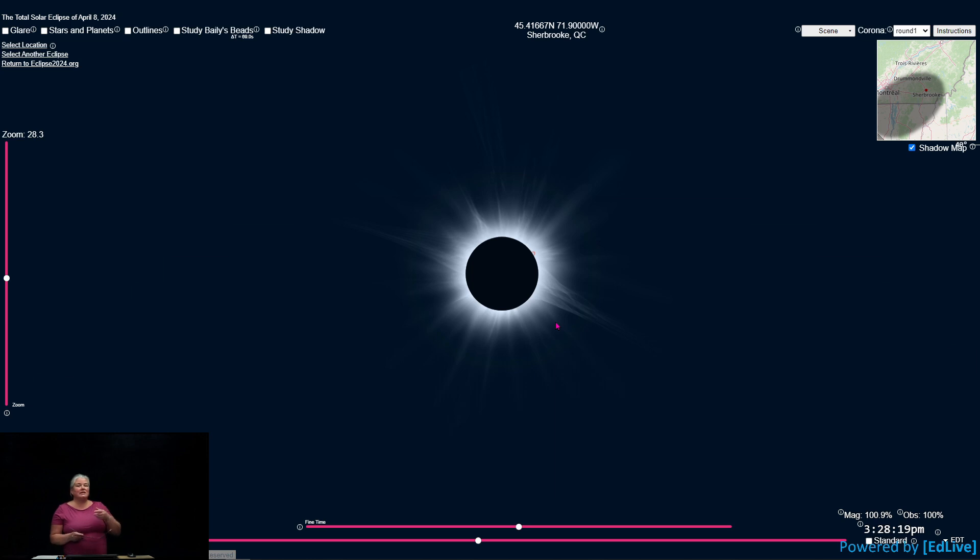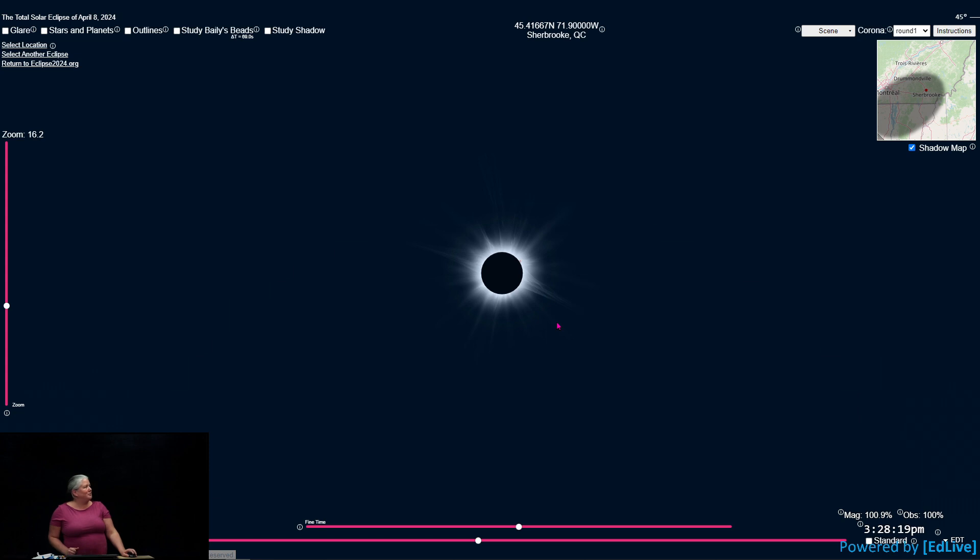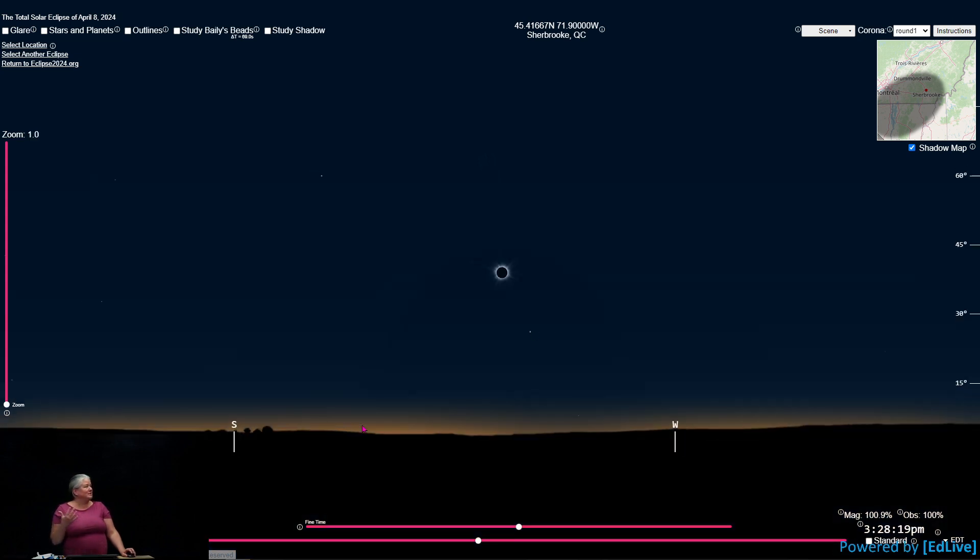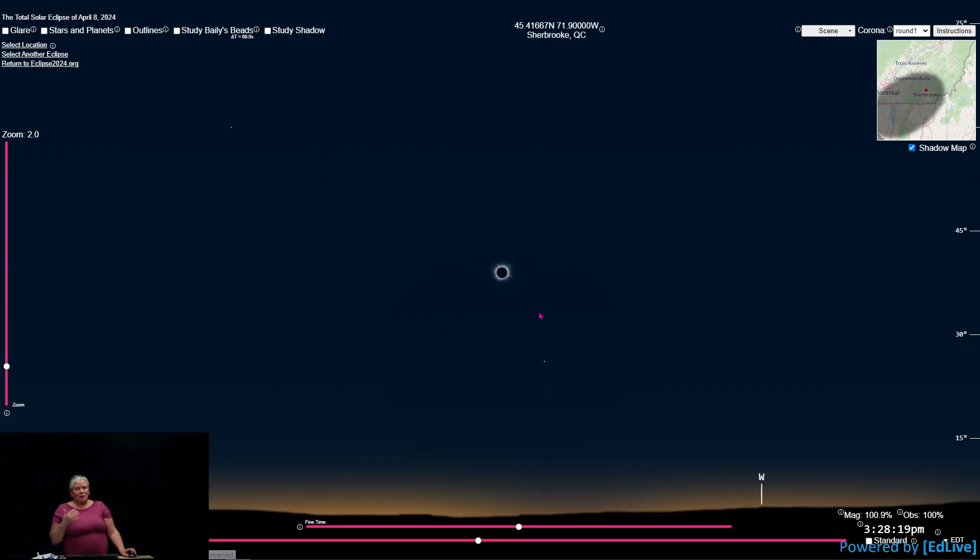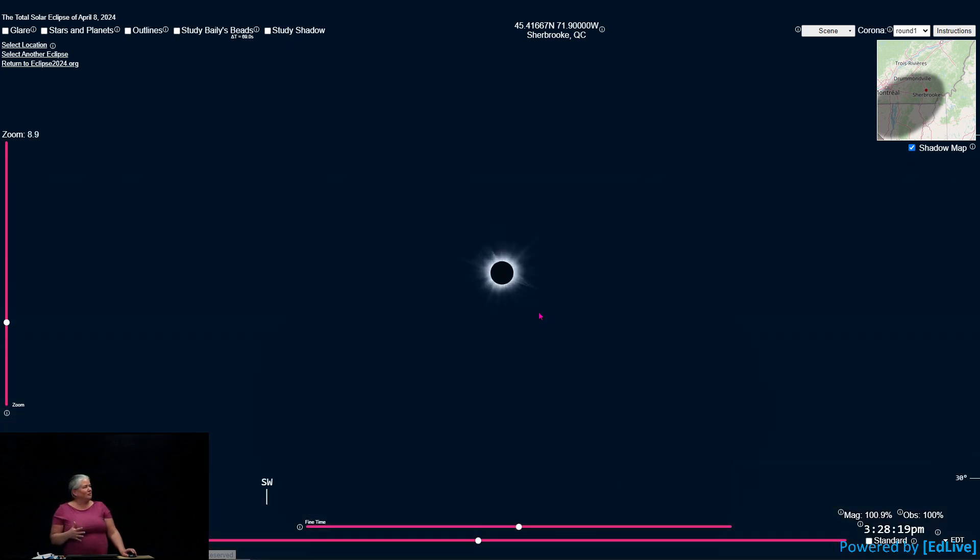So only during totality you can remove your glasses. You will see this in the sky. And make sure to have a look all around you, because you'll notice that it's quite dark. It's very different. It's beautiful. You'll see a glow on the horizon. This is the best show.